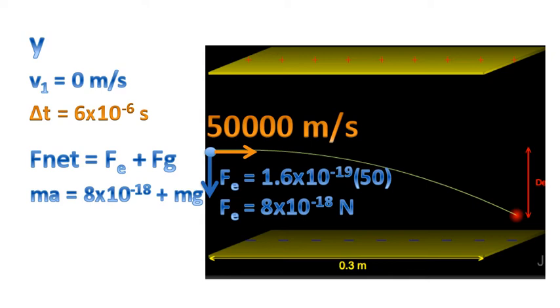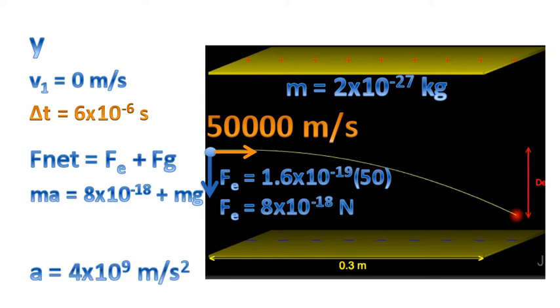Substituting that into our equation. We know the mass is given by 2 times 10 to the negative 27 kilograms. We end up getting the following acceleration. This is the acceleration of the charged particle in the y direction. Because remember the acceleration in the x direction is 0. There are no forces in the x direction.